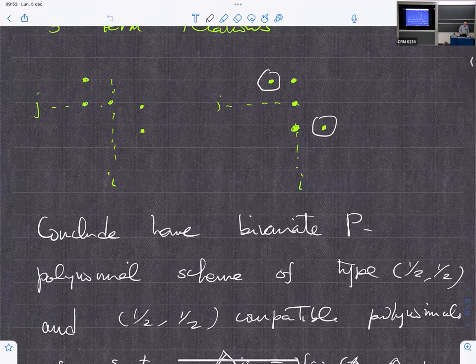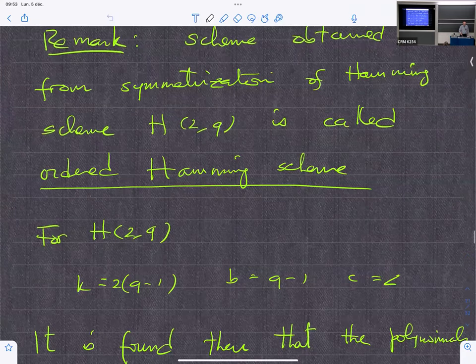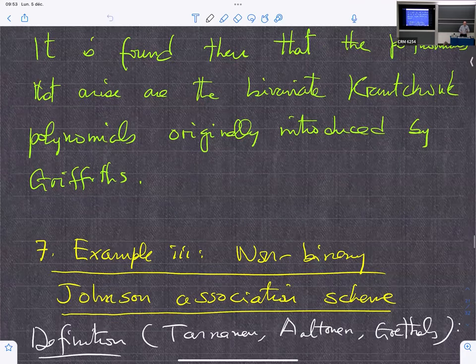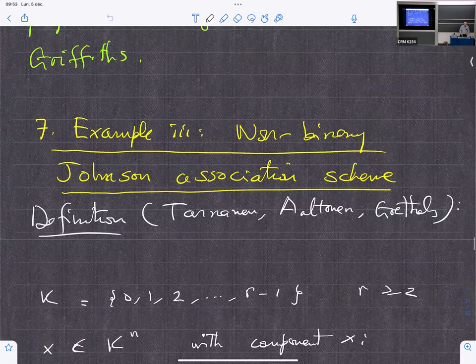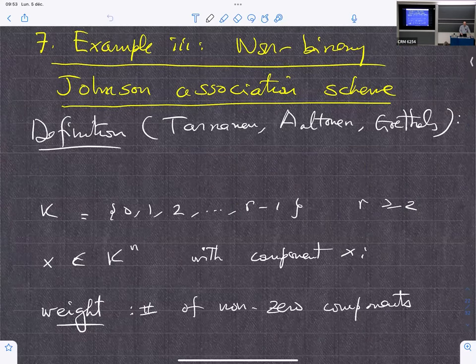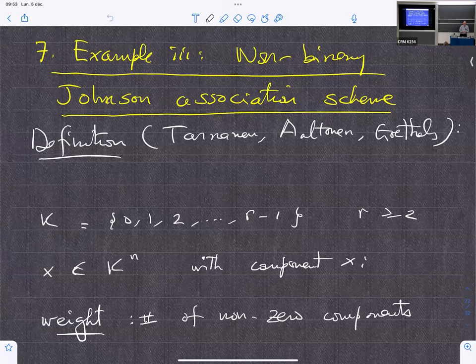And in that case, you find that you have five-term recurrence relations in the two cases. And so, if you just draw the picture, you see that it would look like this. And so this would be a (1/2, 1/2) scheme.